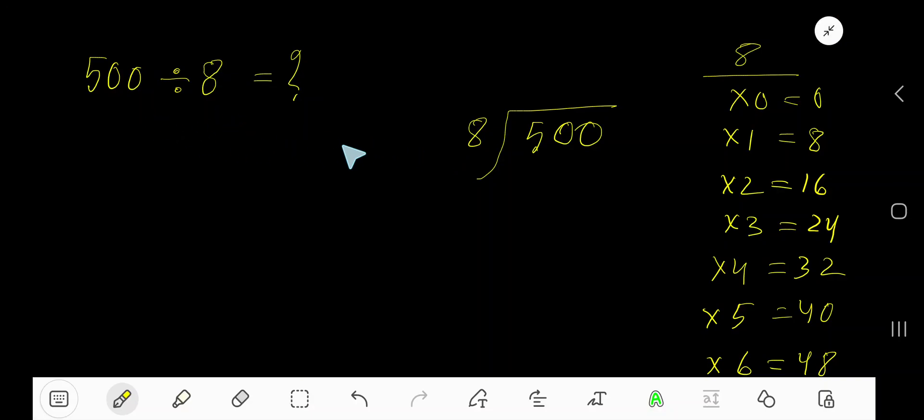500 divided by 8. 8 is a divisor, so we need the multiplication table of 8. 8 times 0 equals 0, 8 times 1 equals 8, 8 times 2 equals 16, 8 times 3 equals 24, 8 times 4 equals 32. To find out the multiplication table of 8, just add 8 with the previous step: 0 plus 8 equals 8, 8 plus 8 equals 16, 16 plus 8 equals 24, 24 plus 8 equals 32.